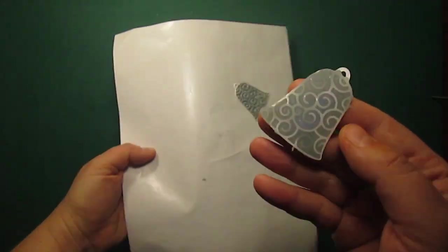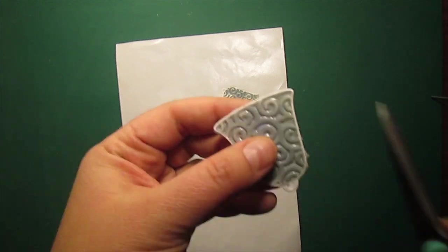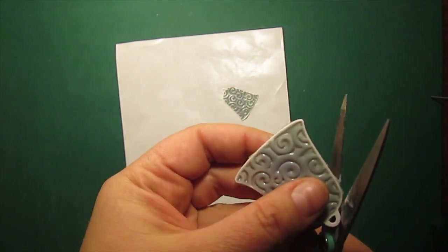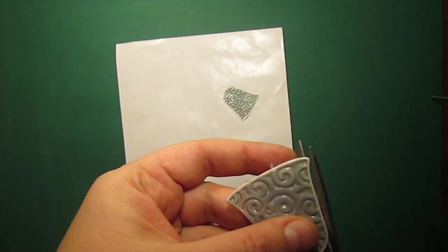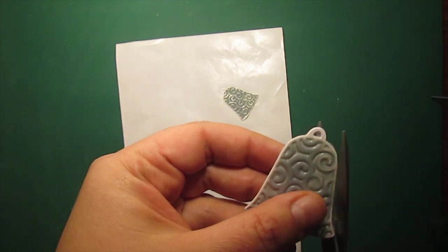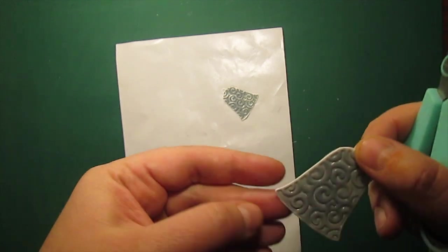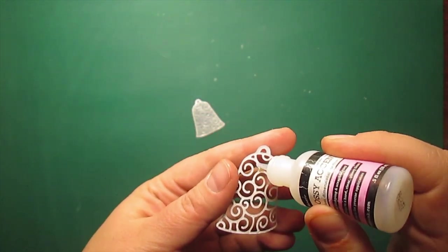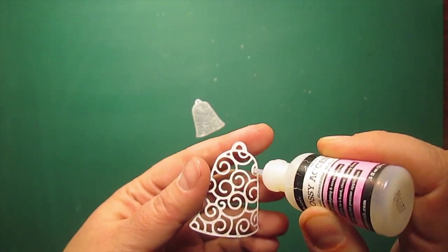When the medium is completely dry, we can lift the bells from the surface. If there is anything sticking out of the outline, we can just trim it down with the scissors. This stuff is like a very soft rubber when it is dry, so it is really easy to cut.